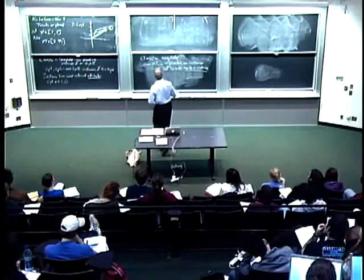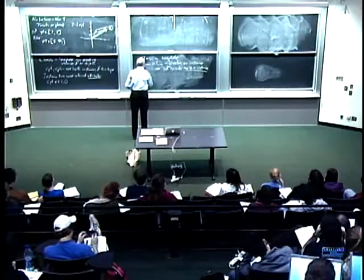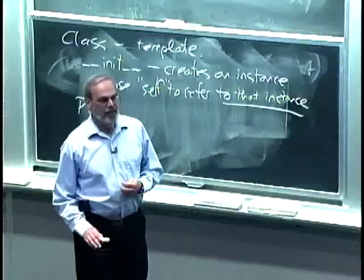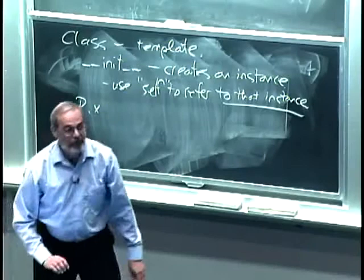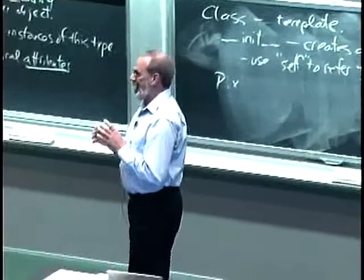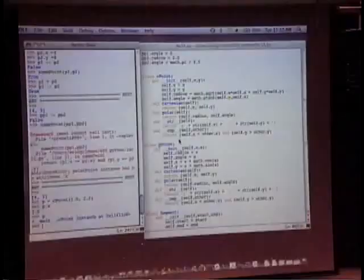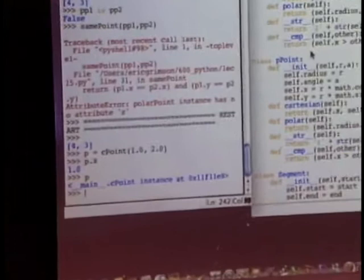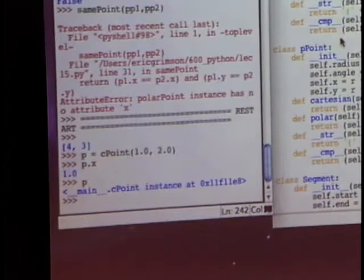If I call p.x, it gets me back the value — but that's not the best way. A better approach is to use an internal method I defined called cartesian, which is an accessor. It gets access to the data by going through a defined method. If I want to get values back out, I could write p.cartesian() to pull out both x and y.